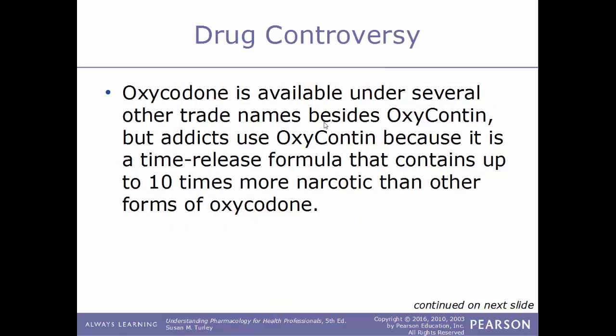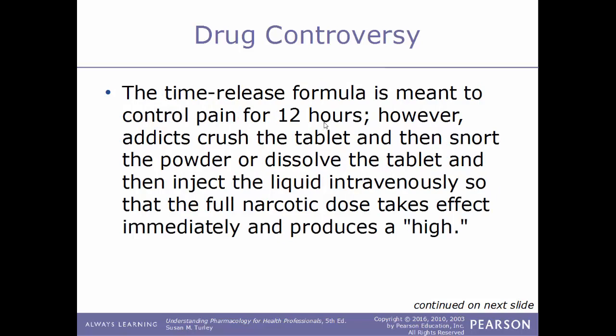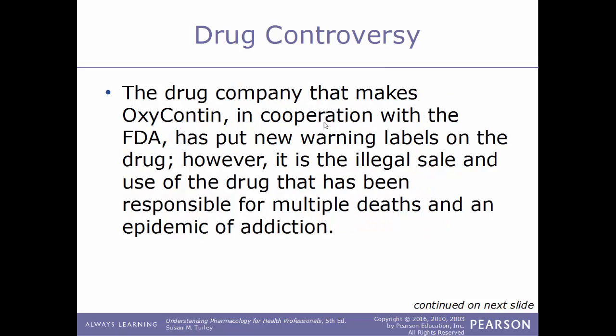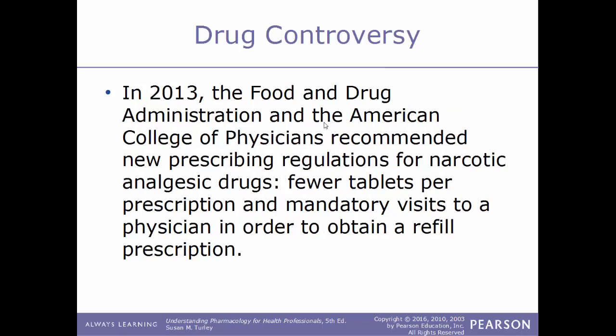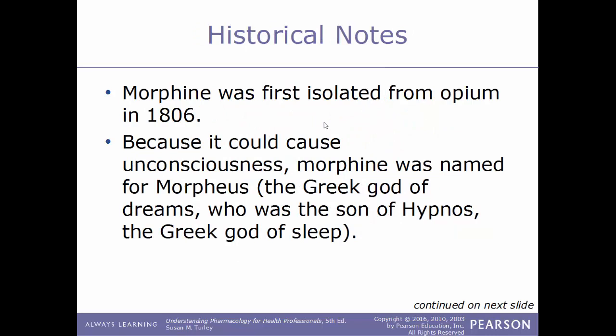Oxycodone is available under several trade names besides OxyContin, but addicts use OxyContin because it is a time-release formula that contains up to 10 times more narcotic than other forms of oxycodone. The time-release formula is meant to control pain for 12 hours; however, addicts will crush the tablet and snort the powder, or dissolve the tablet and inject it intravenously, so the full narcotic dose takes effect immediately and produces a very strong high. The drug company that makes OxyContin, in cooperation with the FDA, has put new warning labels on the drug. In 2013, the FDA and the American College of Physicians recommended new prescribing regulations for narcotic analgesic drugs, including fewer tablets per prescription and mandatory physician visits to obtain a refill.